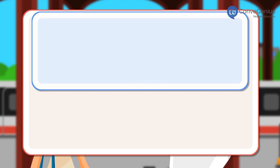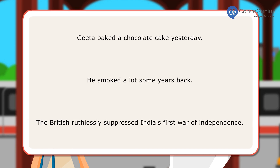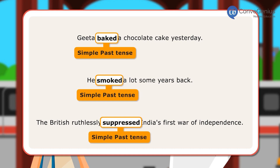Let us look at a few sentences. Geeta baked a chocolate cake yesterday. In the first sentence, 'baked' is simple past tense as it speaks about an action that took place on a particular day in the past. In the next sentence, 'smoked' is simple past tense as it tells about a past habit. In the third sentence, the verb 'suppressed' is again simple past tense since it speaks about an event that occurred in the past, its time being implicit.